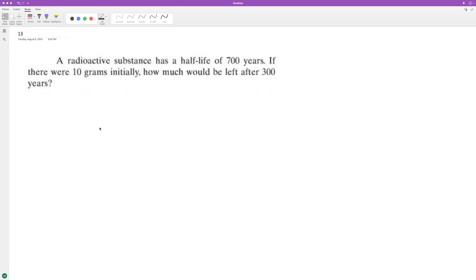A radioactive substance has a half-life of 700 years. If there were 10 grams initially, how much would be left after 300 years? So we need to calculate our K constant value.